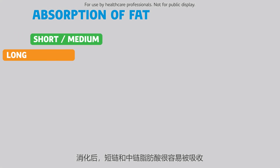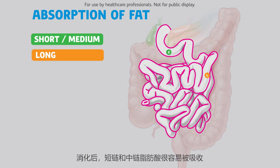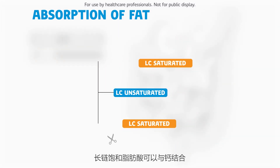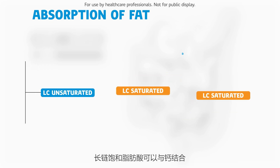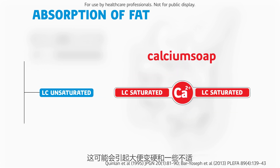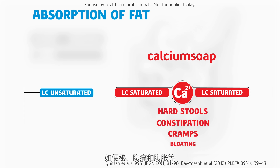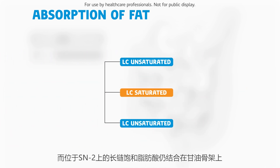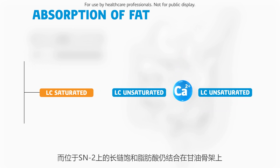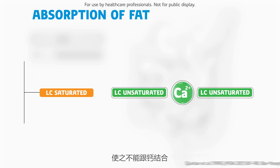After digestion, the short- and medium-chain fatty acids can be easily absorbed. Cut-off long-chain fatty acids remain present in the gut for a longer time and are absorbed in a different way. Long-chain saturated fatty acids are able to bind to calcium, which forms an indigestible complex. This can lead to problems like hard stools and discomfort like constipation, cramps, or bloating. When long-chain saturated fatty acids are at the SN2 position and stay attached to the glycerol backbone, they are not able to bind to calcium.